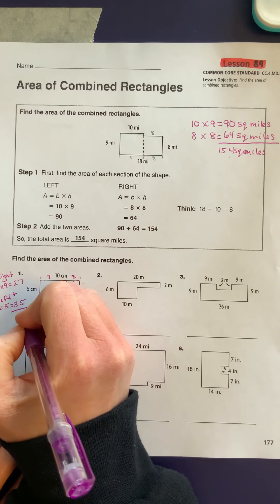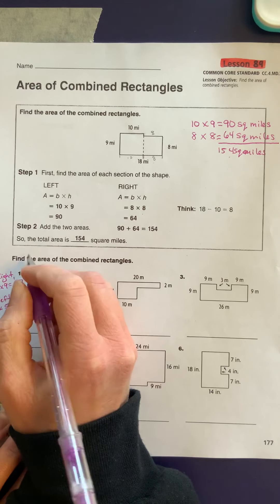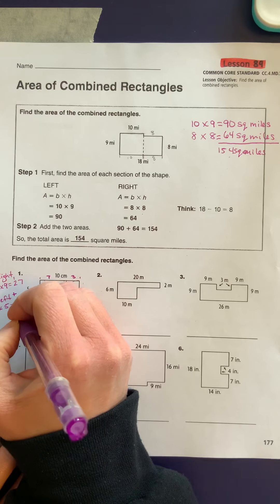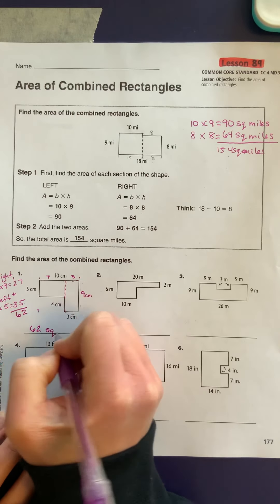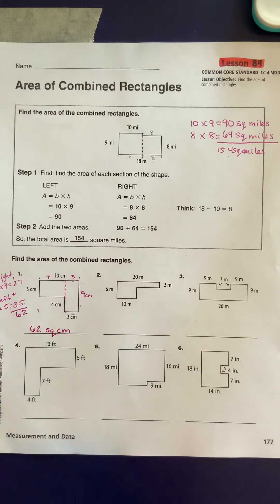So in order to find the combined area, we take 27 and add it to 35. 7 plus 5 is 12, and I'm going to carry the 1, 62. So I have 62 square centimeters.